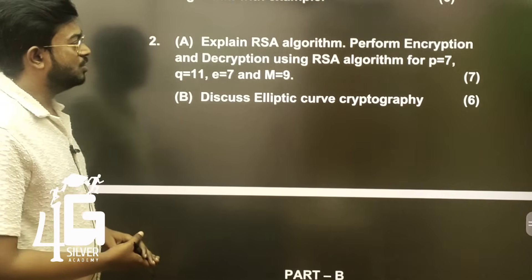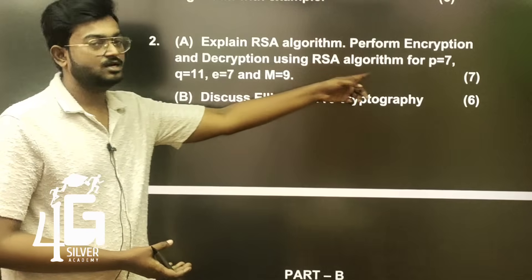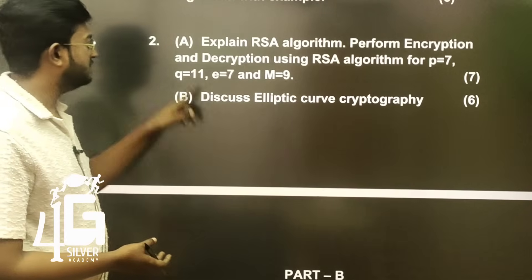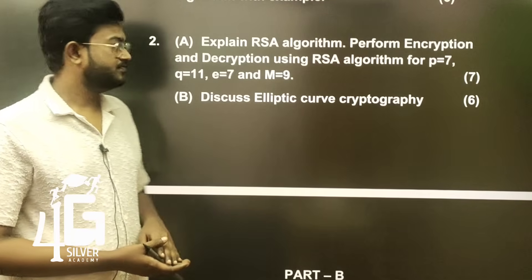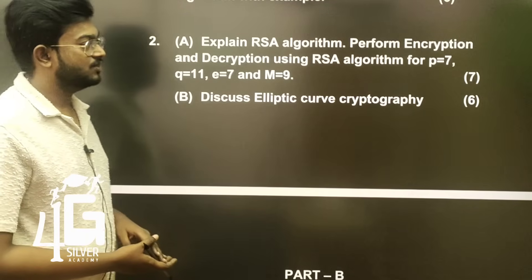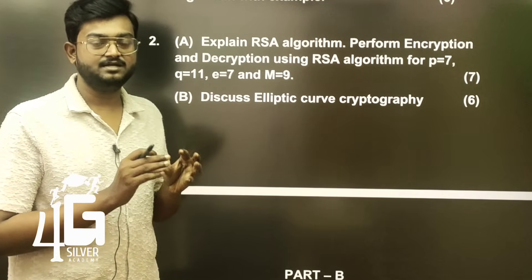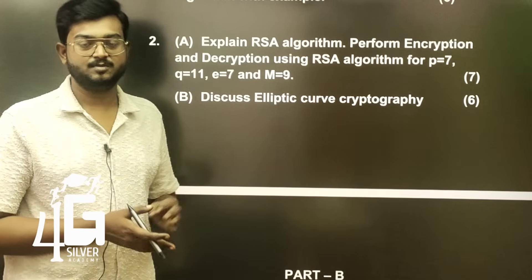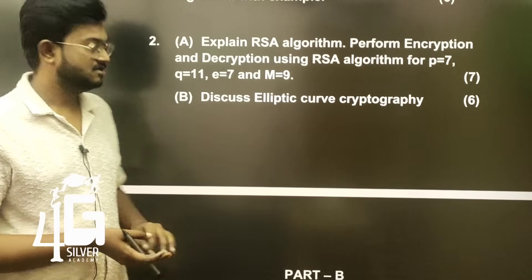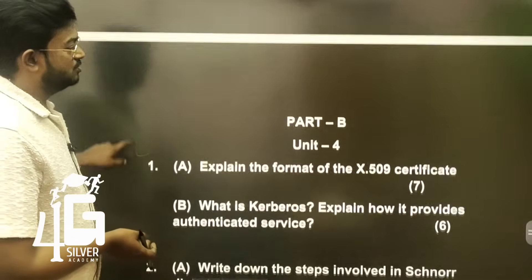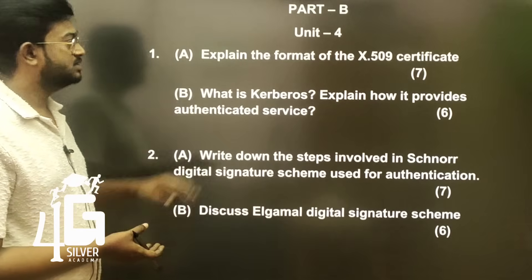Explain the RSA algorithm. Perform encryption and decryption using RSA algorithm for P = 7, Q = 11, E = 7, and M = 9. Discuss elliptic curve cryptography. Explain using notes so you will get full marks in the paper. Part B, Unit 4 important questions.